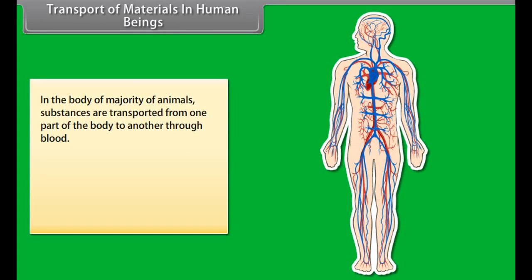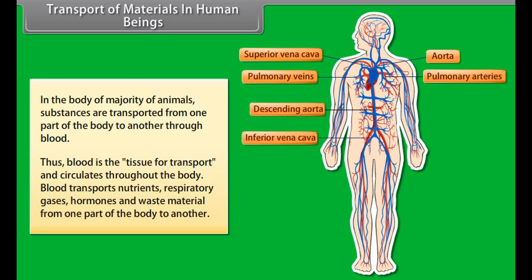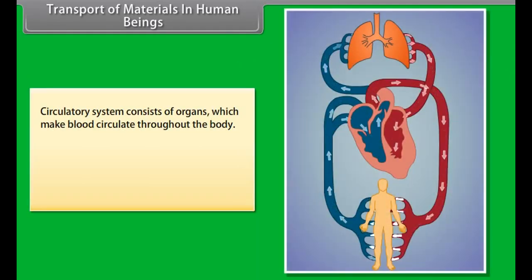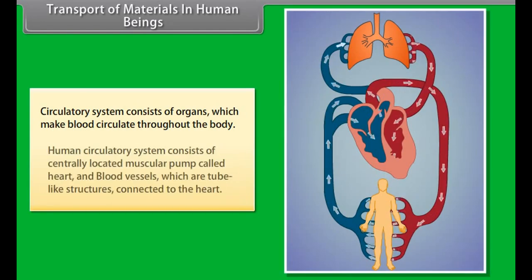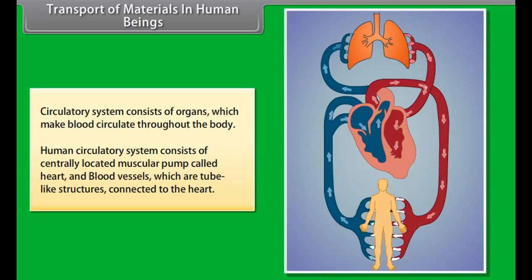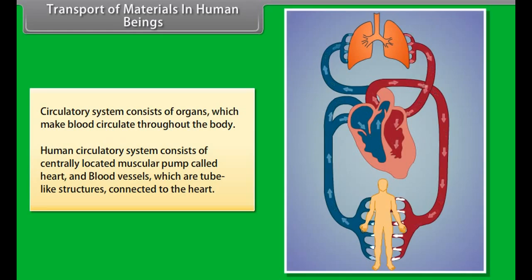In the body of a majority of animals, substances are transported from one part of the body to another through blood. Thus, blood is the tissue of transport and circulates throughout the body. Blood transports nutrients, respiratory gases, hormones and waste material from one part of the body to another. The human circulatory system consists of a centrally located muscular pump called the heart, and blood vessels, which are tube-like structures connected to the heart.